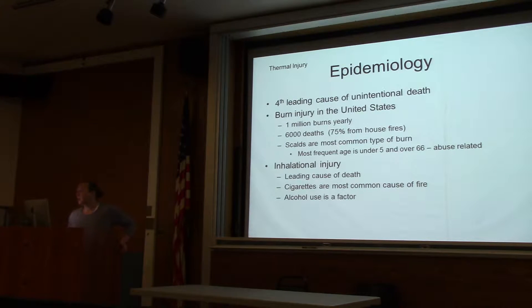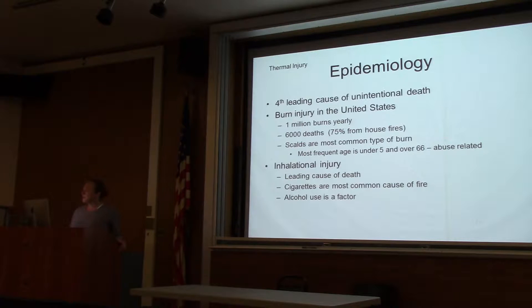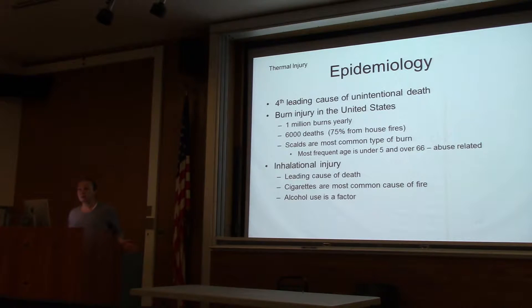Burn injury is the fourth leading cause of unintentional death in the United States. There are a million burns encompassing all comers, and about 6,000 deaths. About three-quarters of them are due to house fires. Scalds are the most common type of burn, and this is age-related — often related to abuse of children and the elderly. Inhalational injury is the most common immediate cause of death; the most common late cause is sepsis. Cigarettes are the most common cause of fire, and alcoholism is usually a factor.